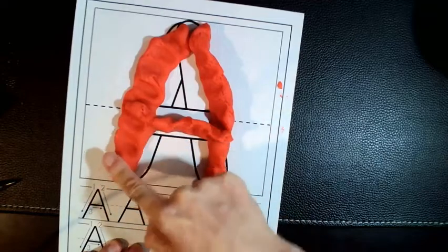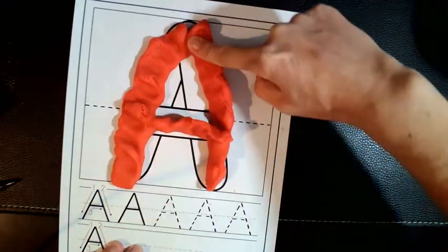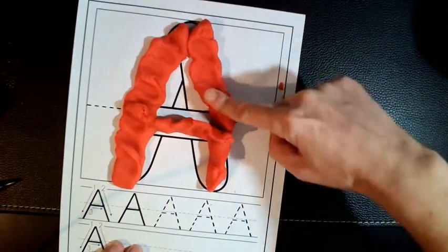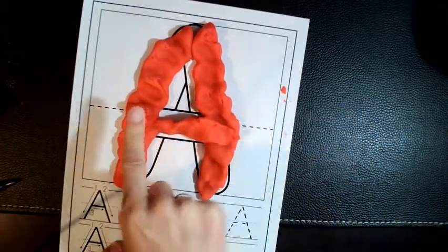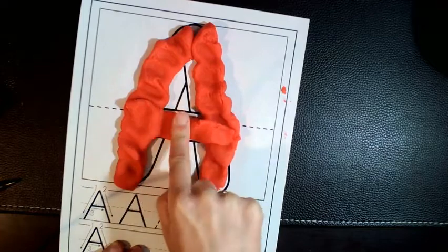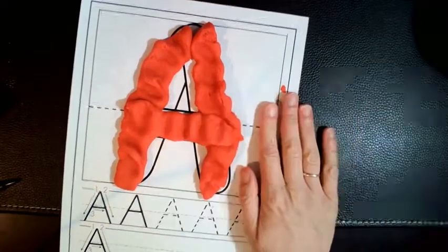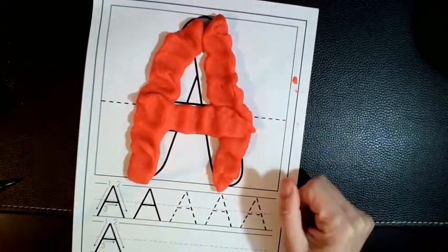Push, jump up, big line down, slide down, back up, and little line across. So now we have our A in a couple of different ways.